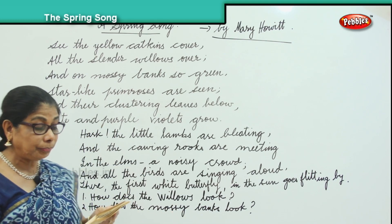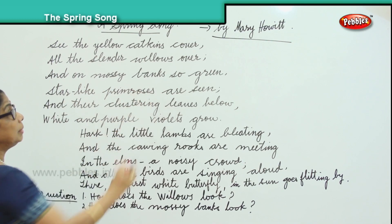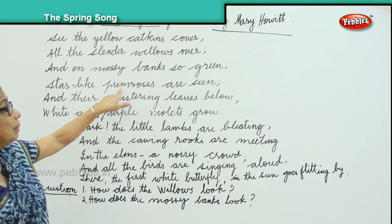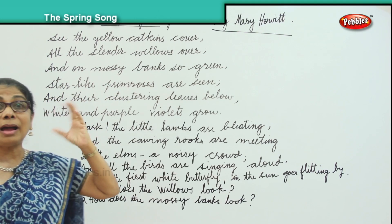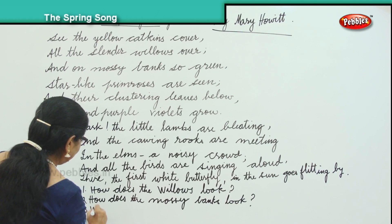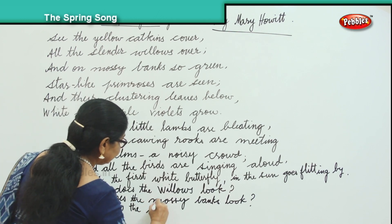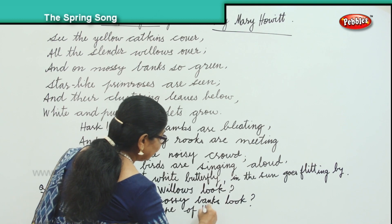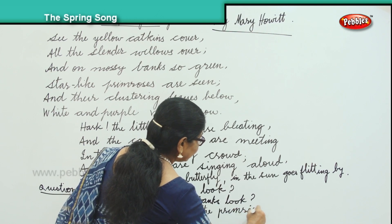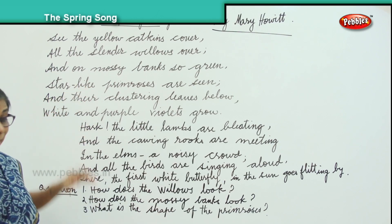The next question is, what is the shape of the primroses? 'And on the mossy banks so green, star-like primroses are seen.' What is the shape of the primroses? The primroses are star-shaped, star-like.